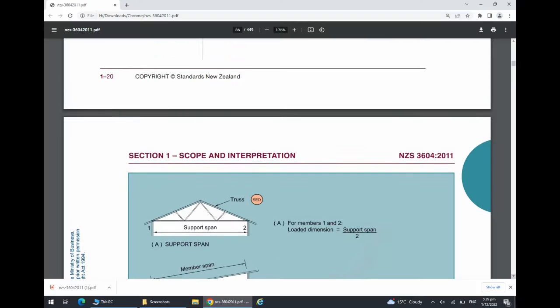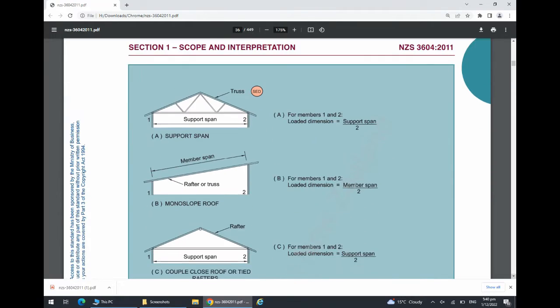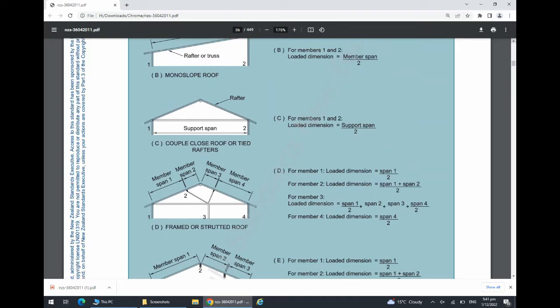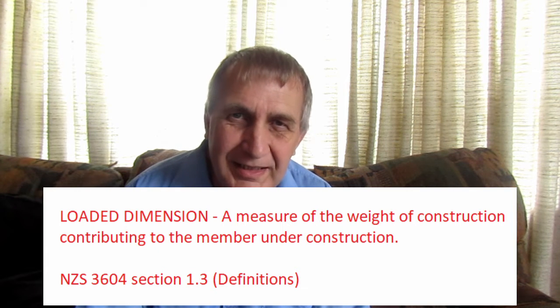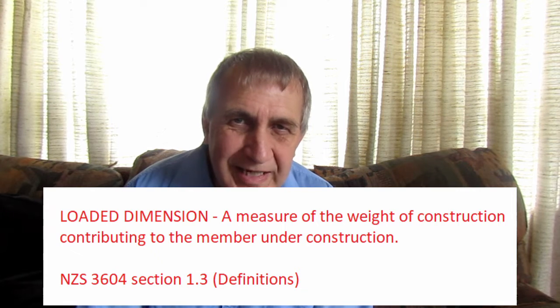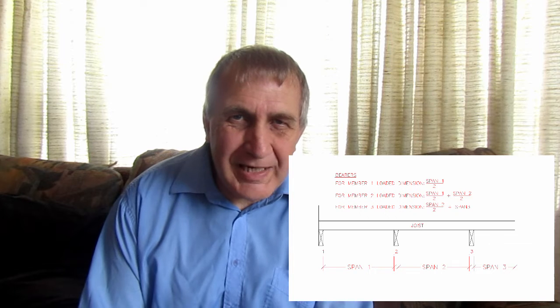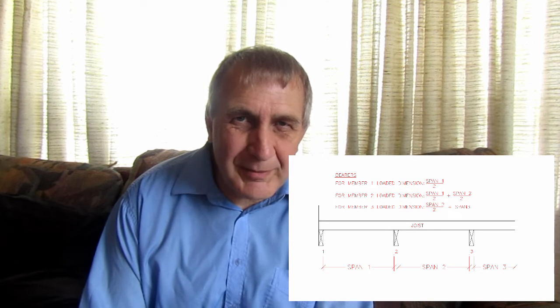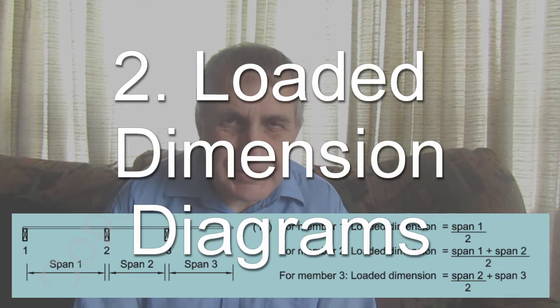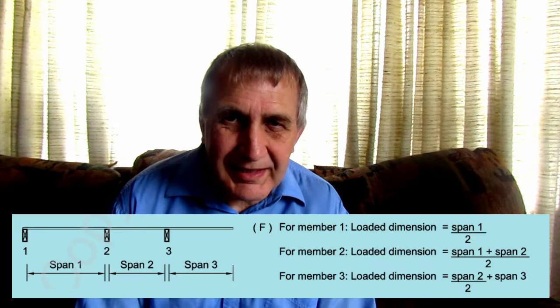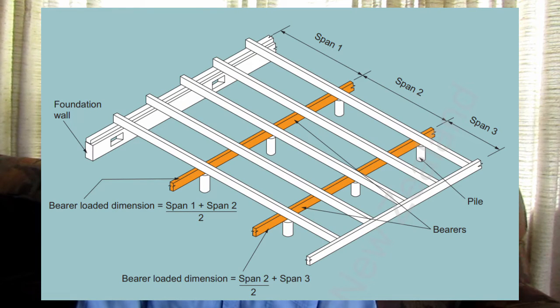The definition of a loaded dimension is actually specified in NZS 3604 under section 1.3, but this definition is not really that clear. What it really is, is the amount of support the bearer provides in terms of a dimension along a joist for a deck. In NZS 3604 there are two diagrams which show how a loaded dimension actually works for a deck.